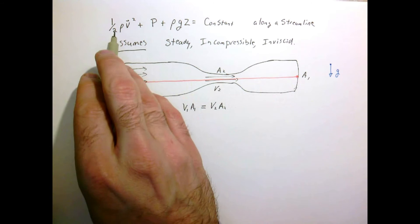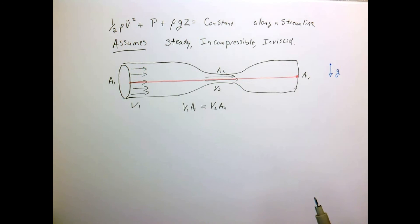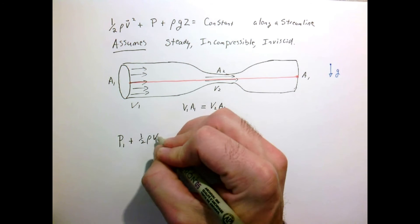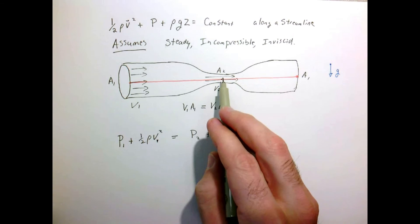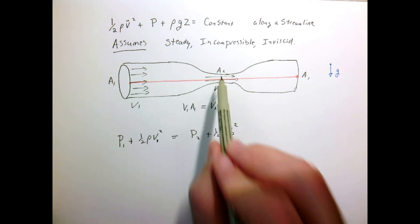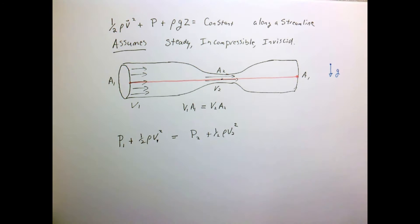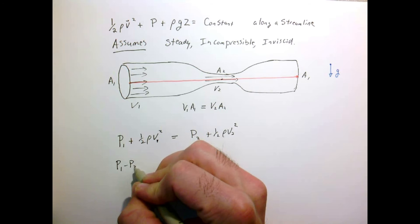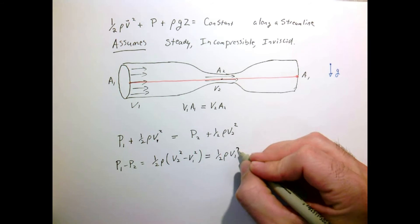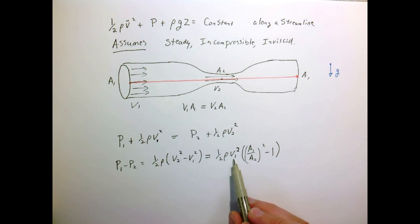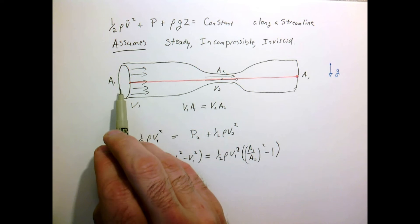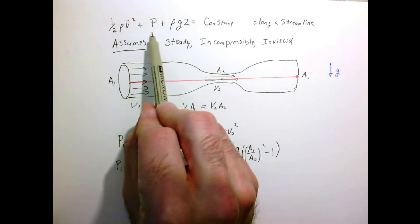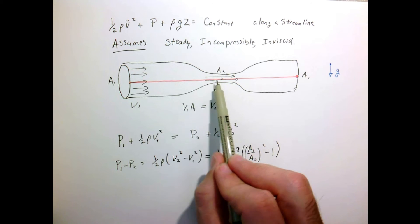Moving from one point to another, one-half rho v-squared plus pressure plus rho*g*z equals a constant. So pressure at point 1 plus kinetic energy at point 1 equals pressure at point 2 plus kinetic energy at point 2. Since there's no change in height, the gravity term cancels. Rearranging, the pressure at 1 minus the pressure at 2 equals one-half rho v1-squared times (A1/A2)² minus 1. Since A1 is greater than A2, this is positive, meaning pressure at 1 is greater than at 2. So as velocity goes up, pressure goes down — the pressure is lower at the throat than at the inlet.